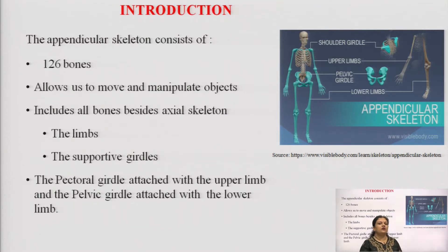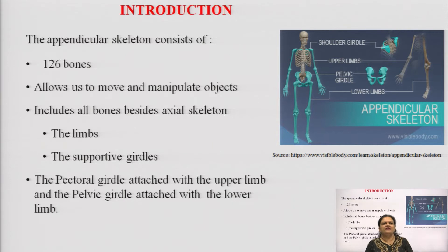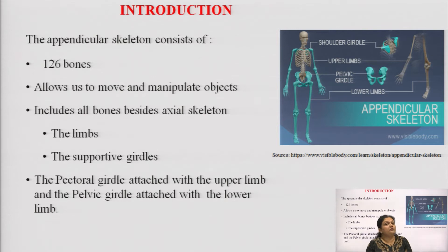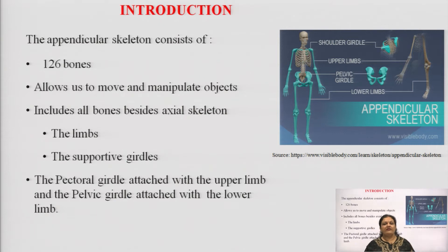The supportive girdles include the shoulder girdle, known as the pectoral girdle, and the pelvic girdle in the pelvic area. These girdles give us proper support as well as the framework of the human body to sit straight and stand straight. The pectoral girdle attaches with the upper limb and the pelvic girdle attaches with the lower limb.